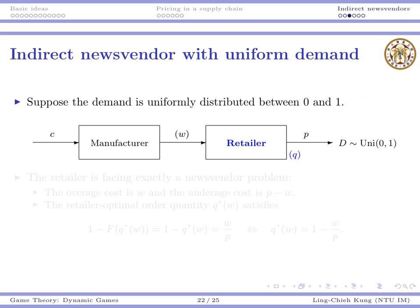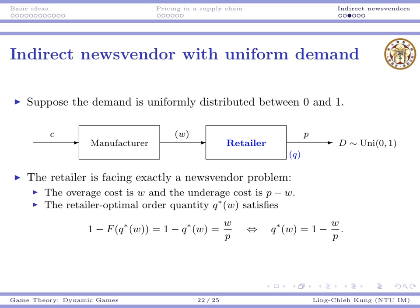To make life easier, let's assume demand is uniformly distributed between zero and one. Let's focus on the retailer's part first. The retailer faces exactly a newsvendor problem with overage cost and underage cost — nothing really changes from the basic newsvendor model, except that w is now controlled by the manufacturer.